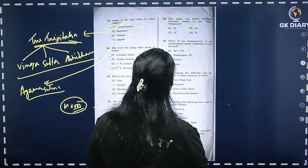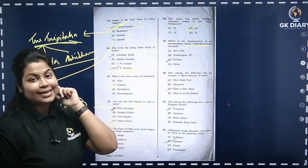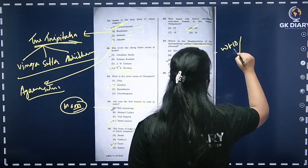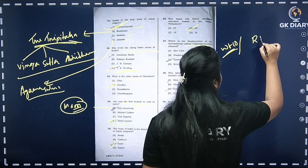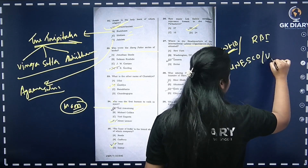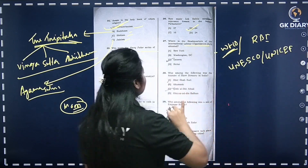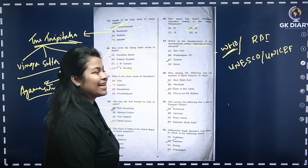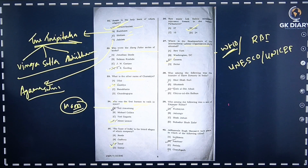Where is the headquarter of the International Labour Organization? ILO. The WHO and ILO are related. DHS and DME are related. The ILO has different options — the headquarters is in Geneva, Switzerland.